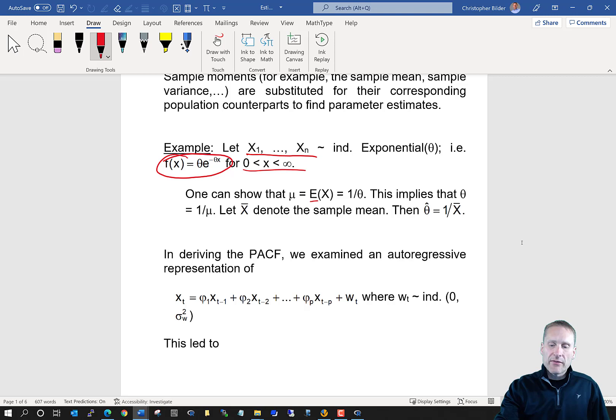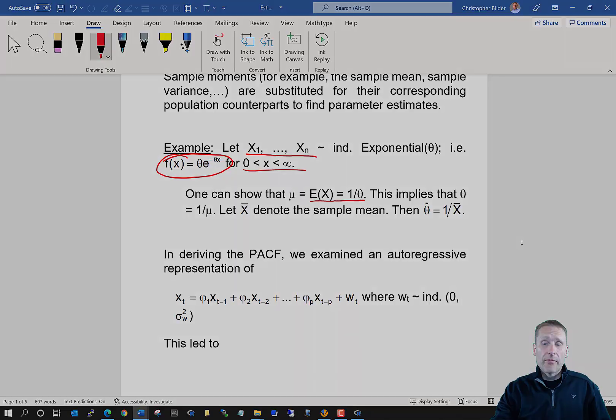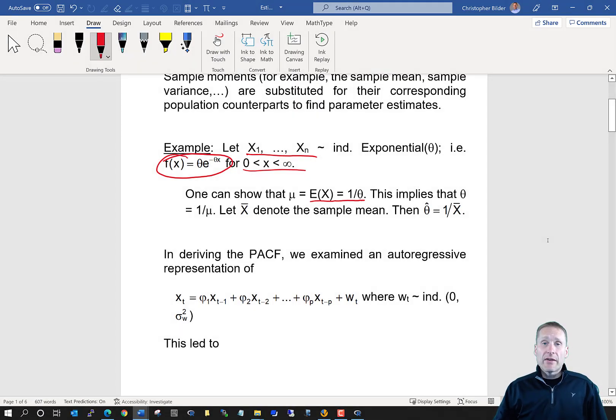One can show that the expected value of x is equal to 1/θ. This implies that θ = 1/μ. The way that method of moments estimation works is, first of all, solve for a parameter of interest, let's say theta, in terms of one of our moments. And then what we do is simply we replace the moment, this mu, with the corresponding estimate, in this case would be x bar, and that's how you get an estimate for theta. So theta hat is equal to one over x bar.